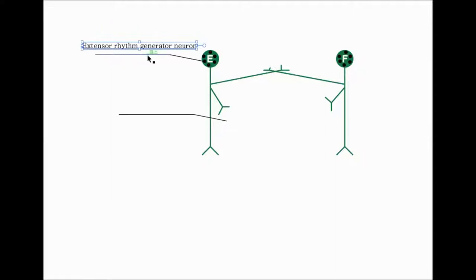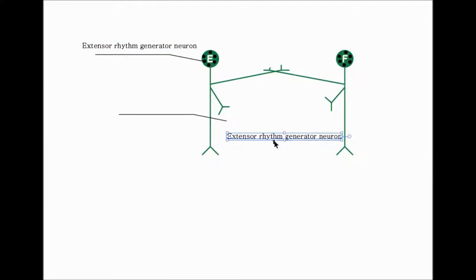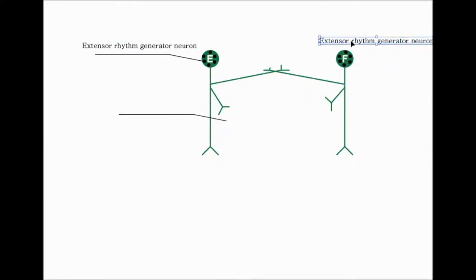Similar to the pacemaker cells in the heart, these neurons can actually generate the rhythmic pattern of firing. This here is the flexor rhythm generator neuron.